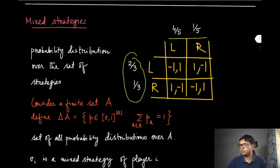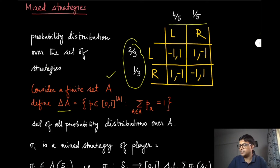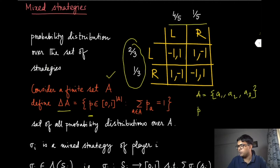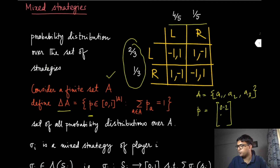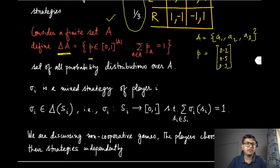Let us make our notation a little more clear to formally represent all these things. Suppose we have a finite set A, and we define Delta(A) as the set of probability distributions on A. So p is a vector — suppose A has three elements, say a1, a2, a3 — therefore p will be a vector of length three, each component representing one of these elements in A, and they should sum to one. For example, 0.2, 0.3, and 0.5 is one valid entry in this set Delta(A), which is the set of all probability distributions over A.